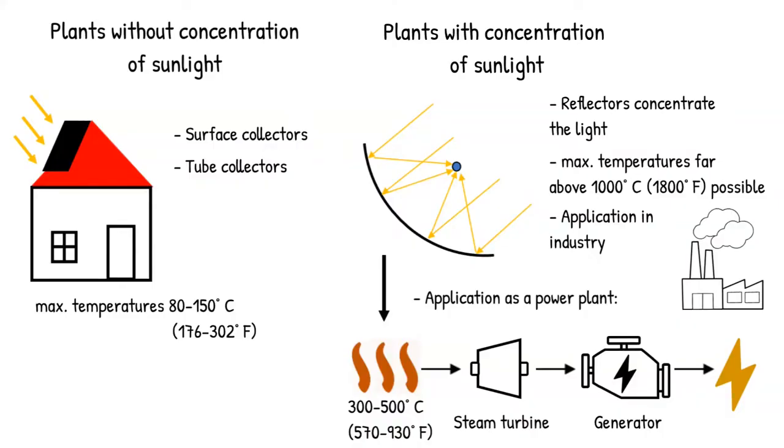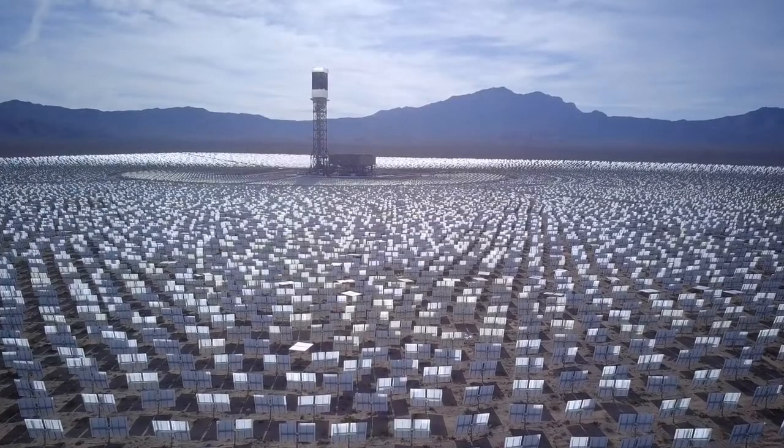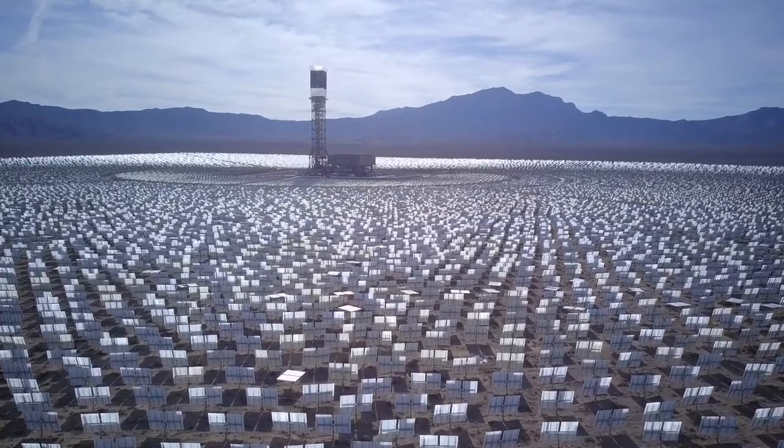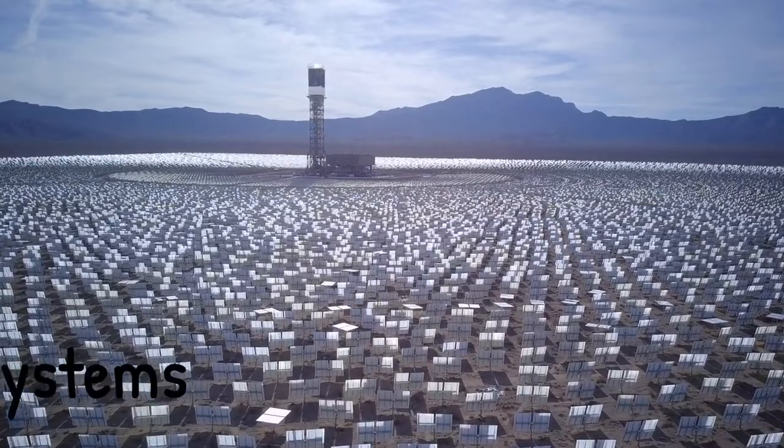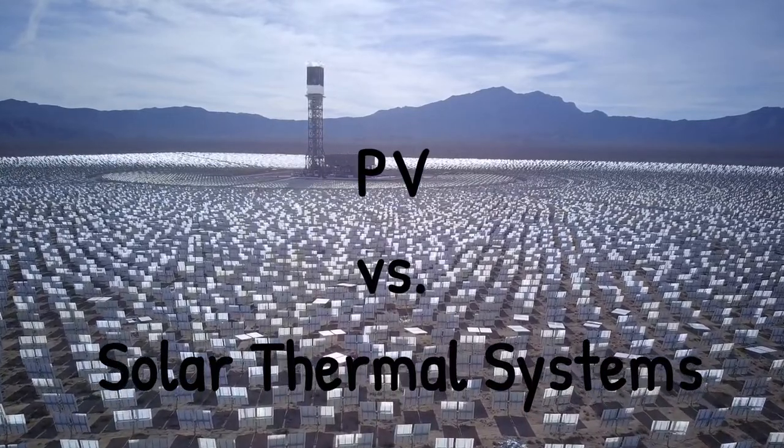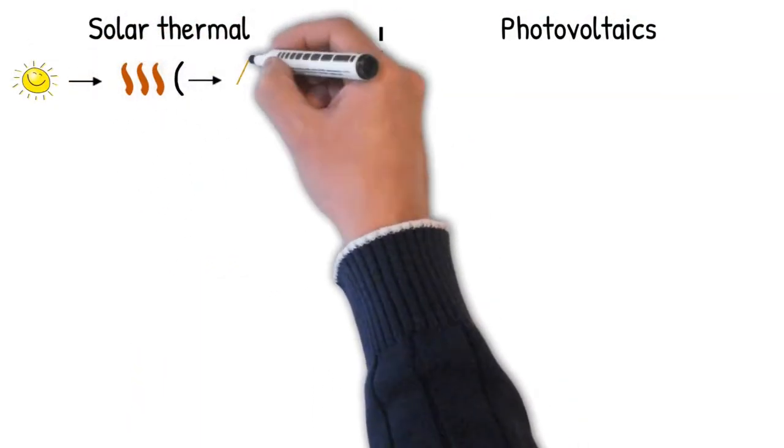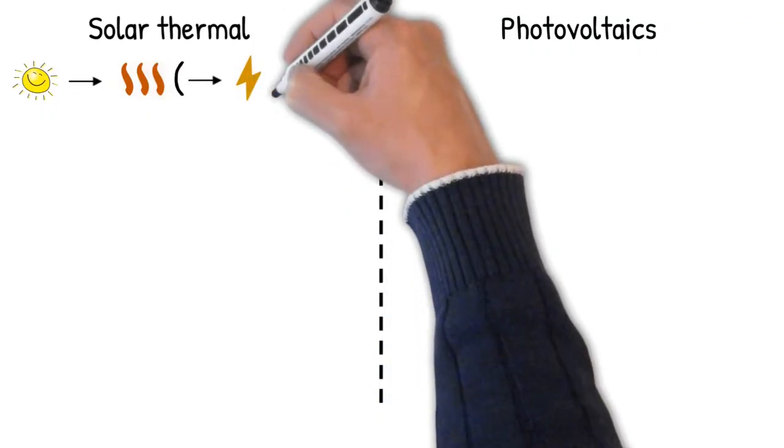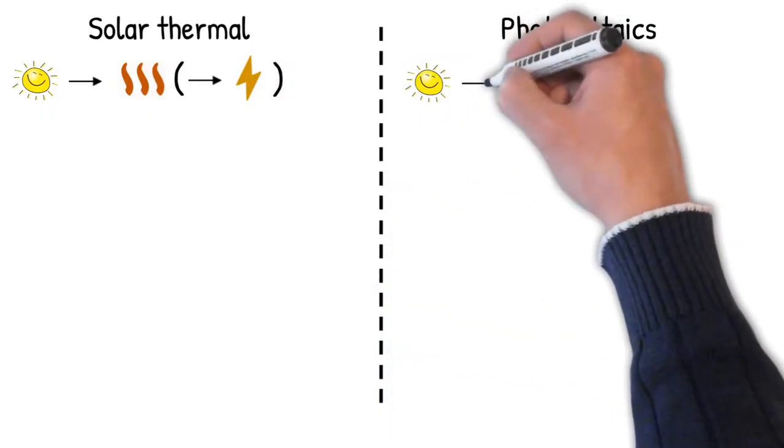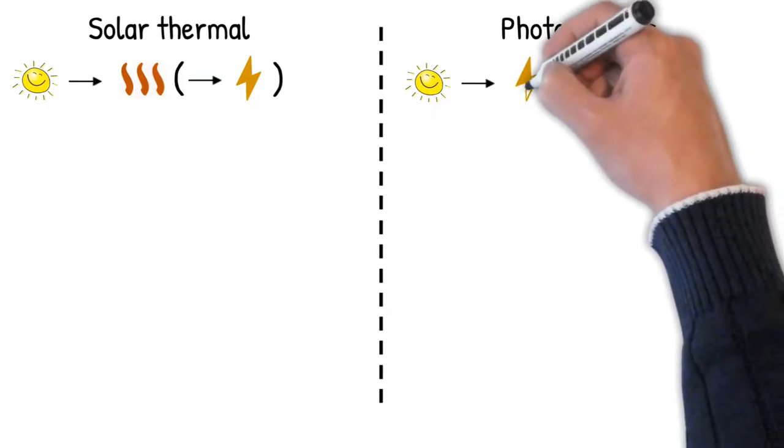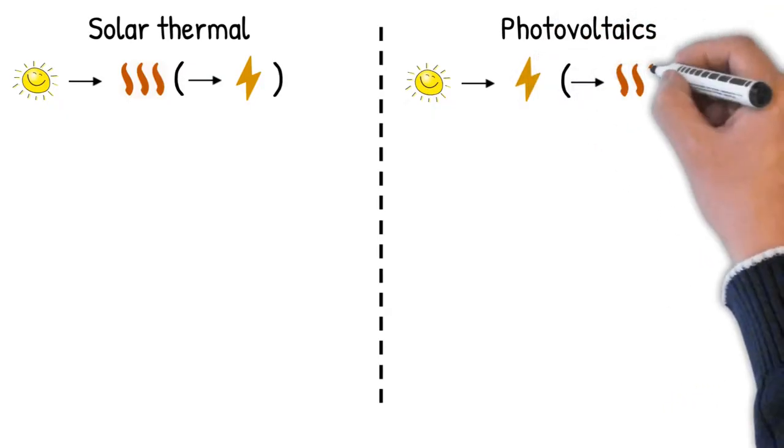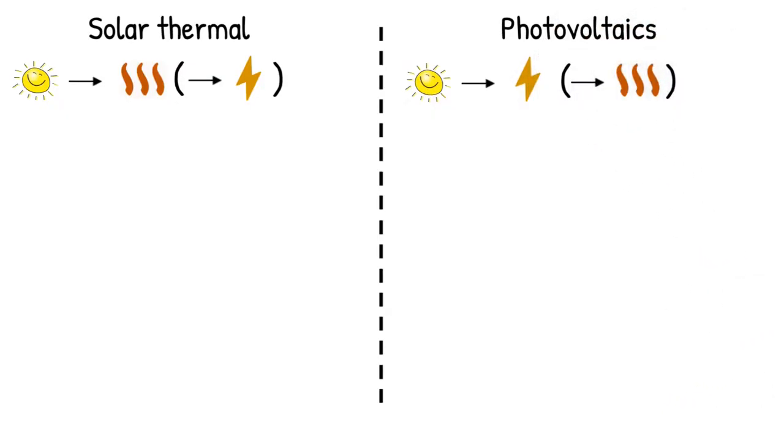In the following we will take a closer look at the differences, as well as the advantages and disadvantages of solar thermal and photovoltaic systems. While solar thermal systems can only generate electricity indirectly and heat directly, PV systems generate electricity directly. However, they can also be used in conjunction with the heat pump to generate heat efficiently.